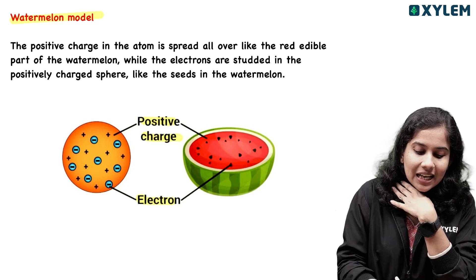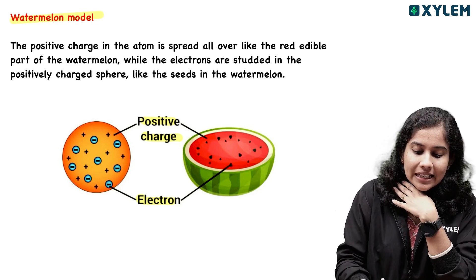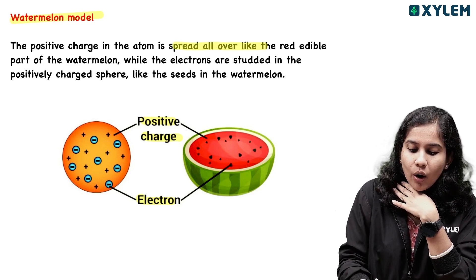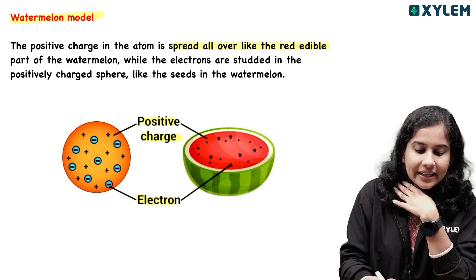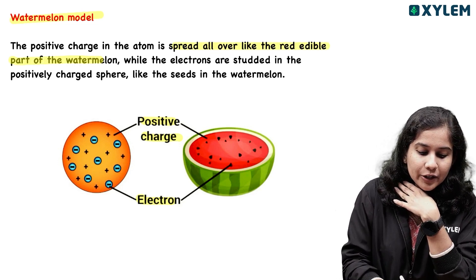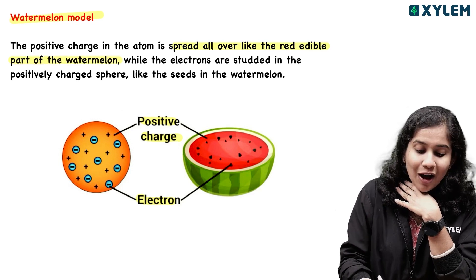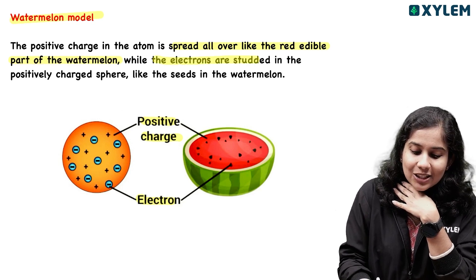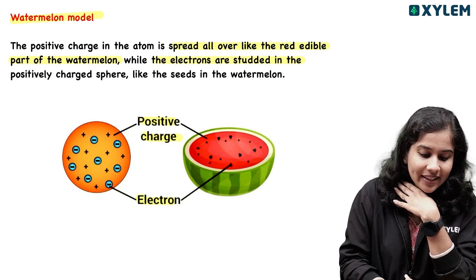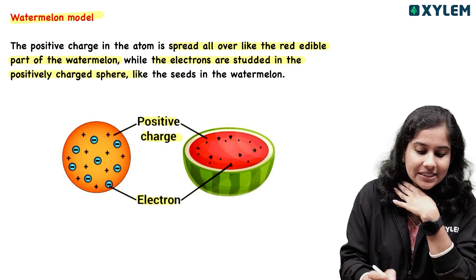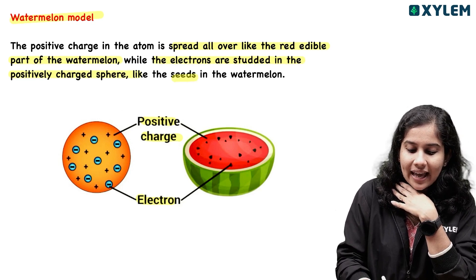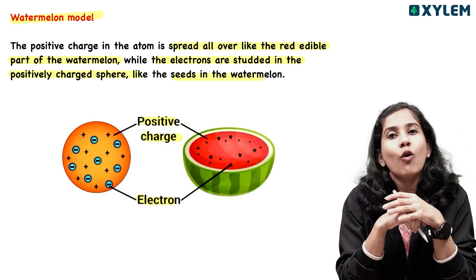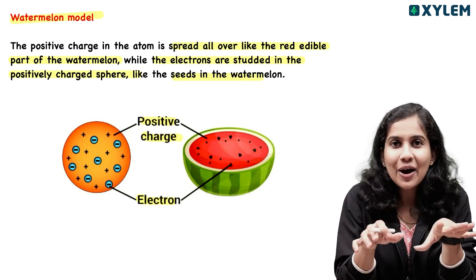What did Thomson say? The positive charge in the atom is spread all over — like the red edible part of a watermelon — while the electrons are spread in the positively charged sphere, like seeds in a watermelon.